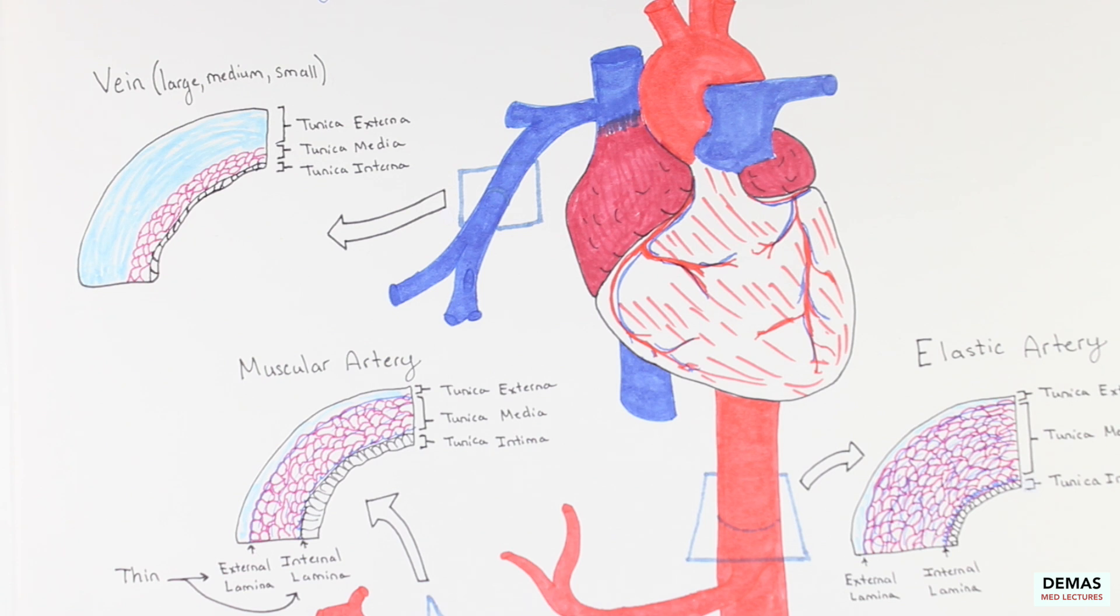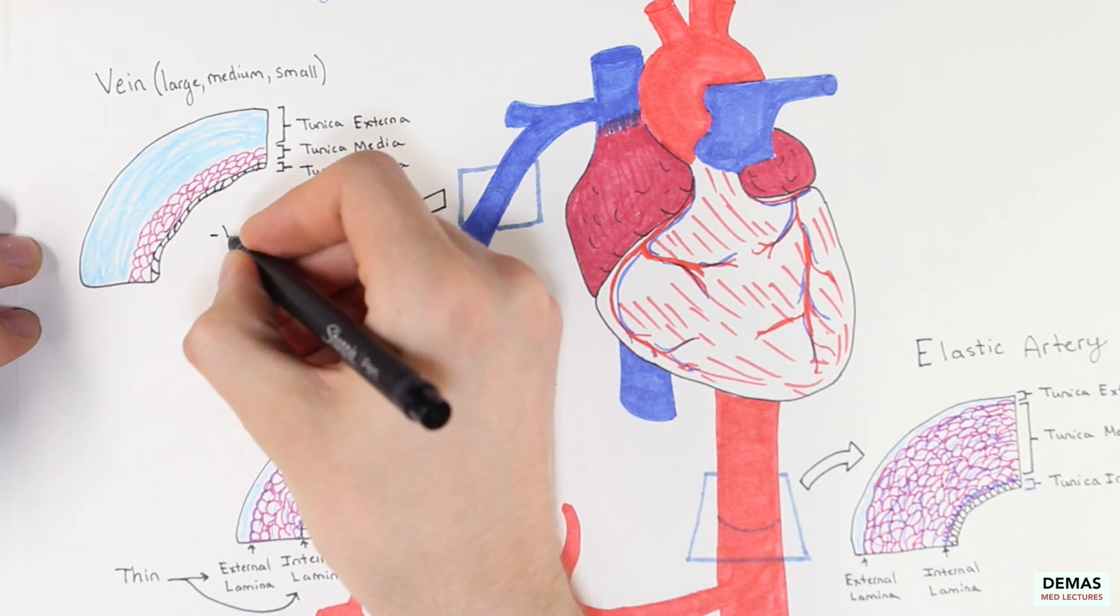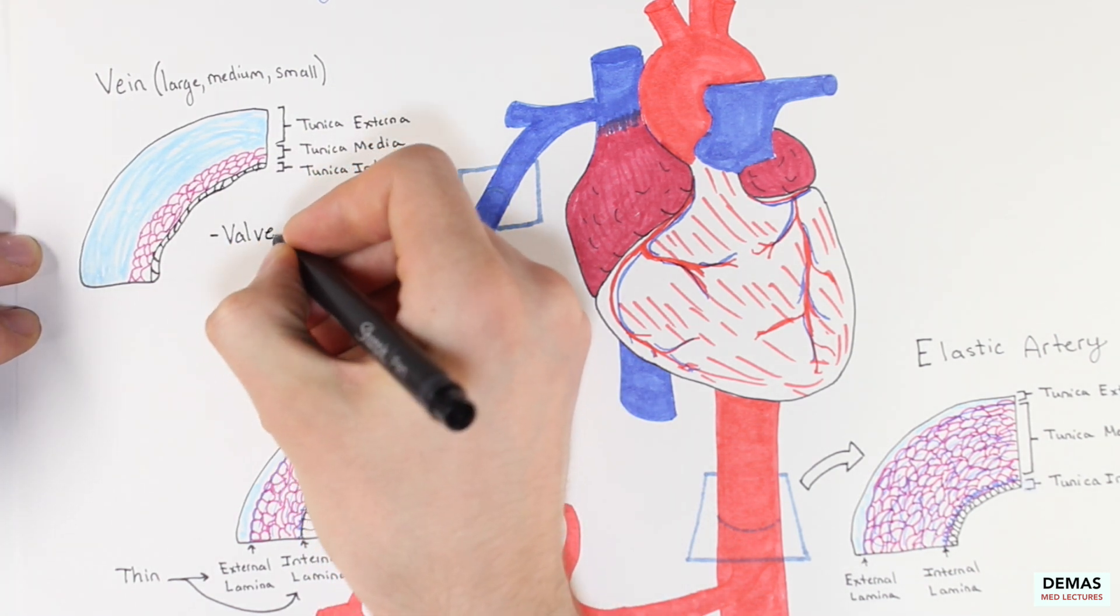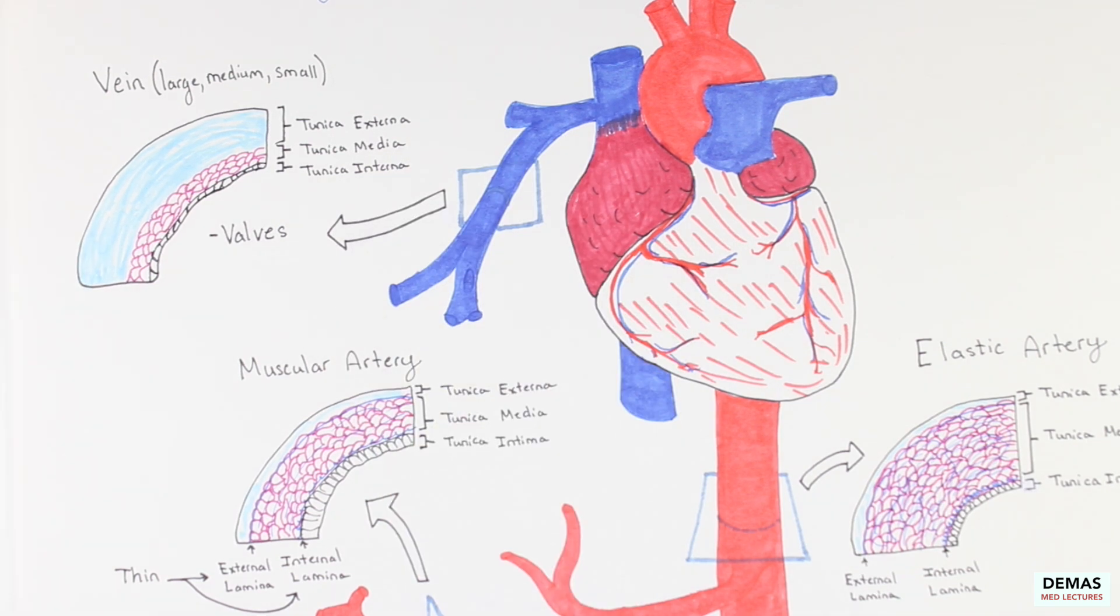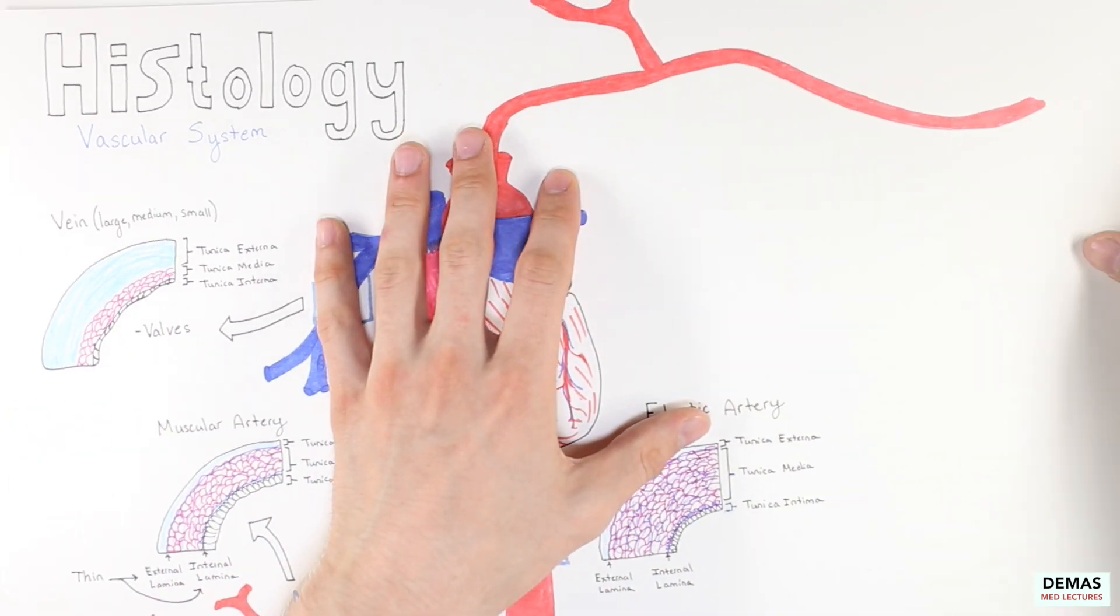Since veins are relatively inelastic and experience low blood pressure, an important feature that veins have to help return blood to the heart are valves. These valves prevent backflow of blood and are specific to veins. No other vasculature in the body other than the heart has valves.